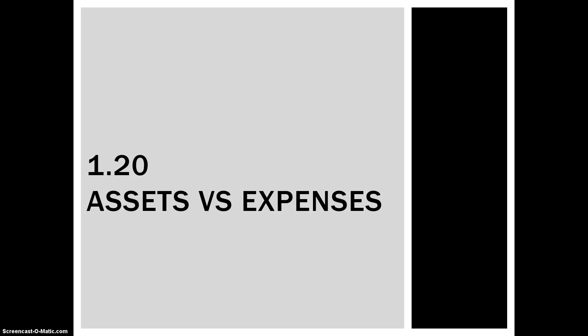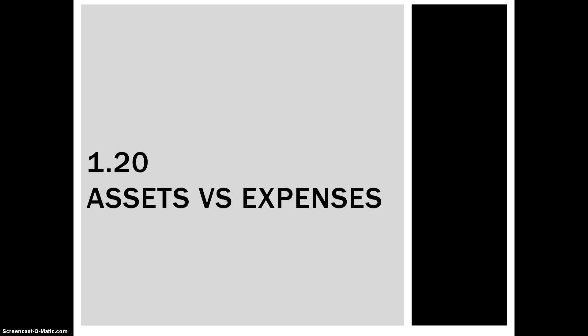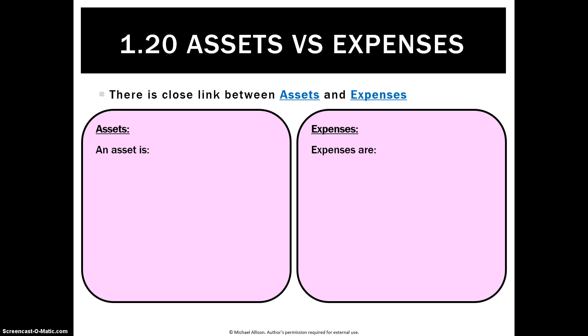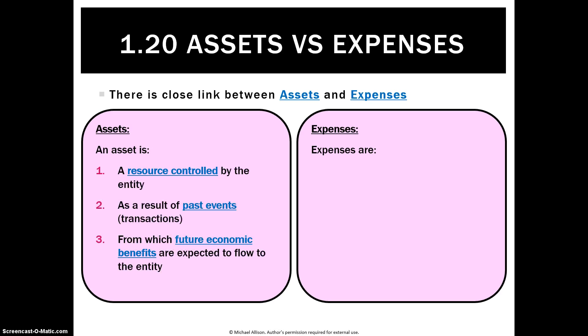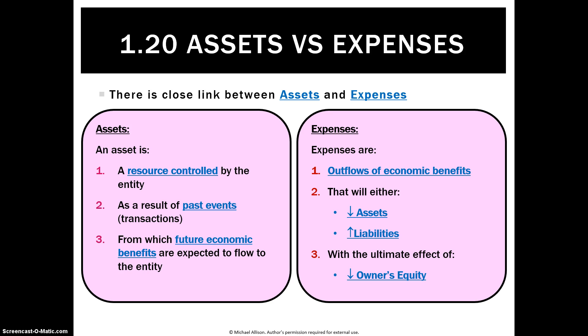Lastly, we'll compare an asset with an expense. If we look at the definition of an asset, we can see that it's a resource controlled by the entity as a result of past events from which future economic benefits are expected to flow to the business, whereas an expense is an outflow of economic benefits that either decreases assets or increases liabilities, or the ultimate effect of decreasing owner's equity.